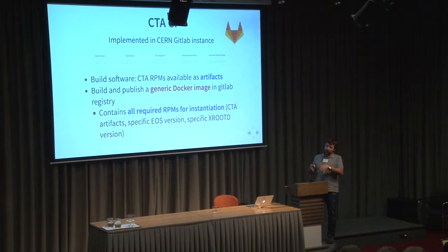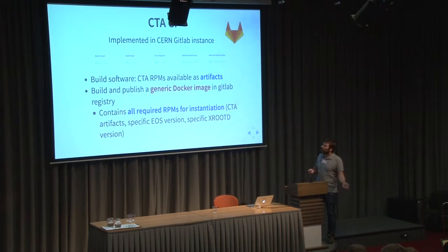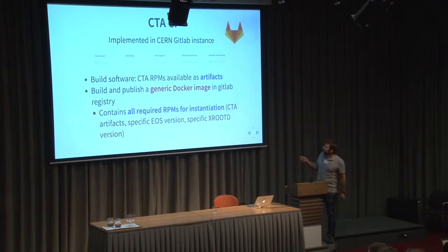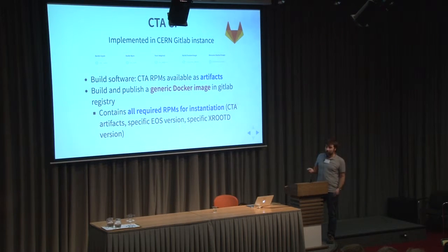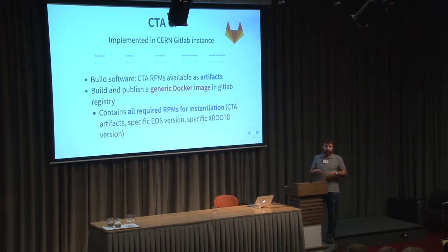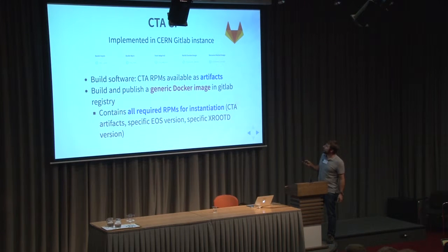We have a single image for all the tests. This image should be able to be instantiated into whatever we need — CTA, EOS, and all the components we need. It contains all the CTA artifacts that were built previously, a specific EOS version, a specific xrootd version, and everything is contained there so that we can replay this. This is a reproducible test when you have this image.